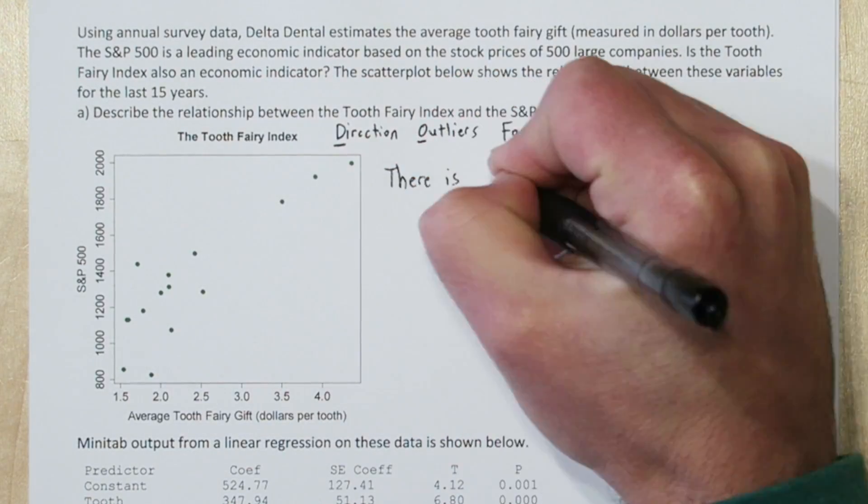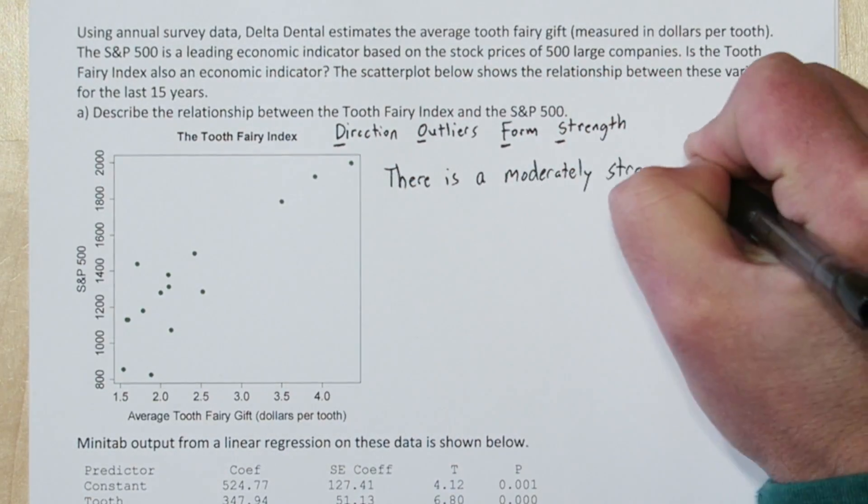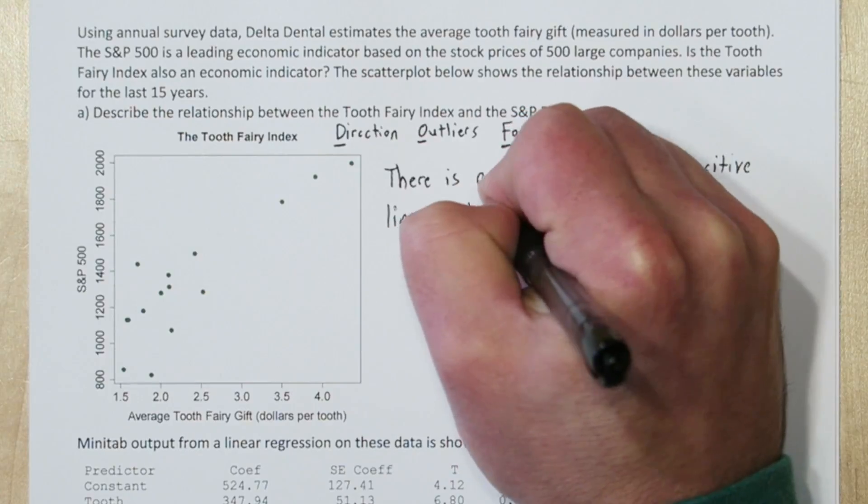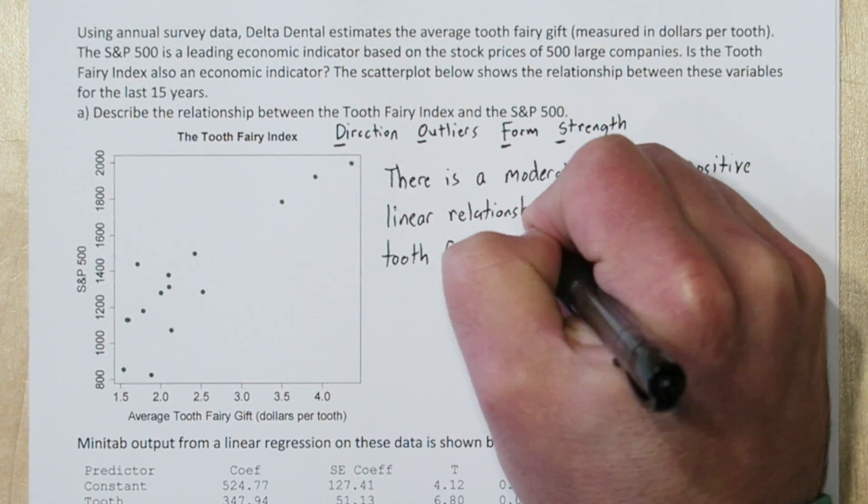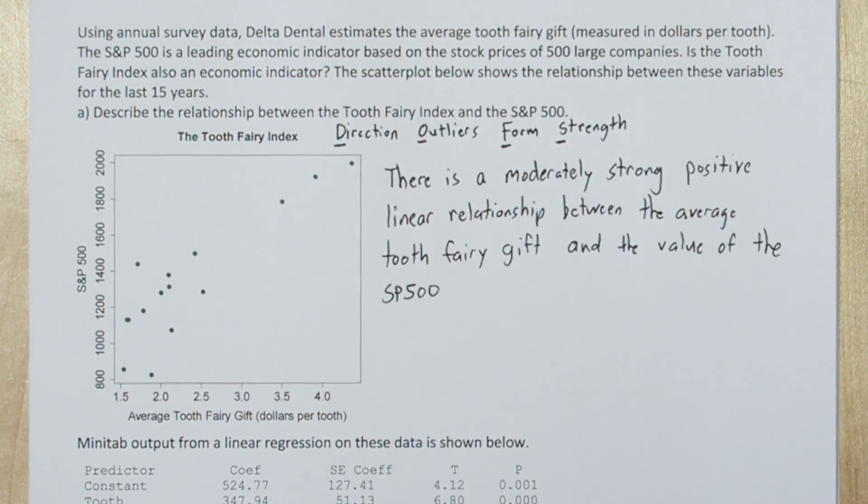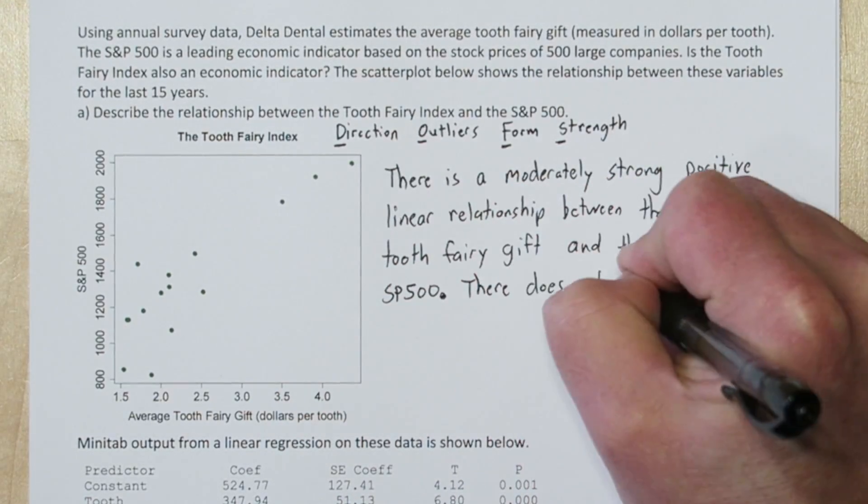So for our description, we'll say there's a moderately strong, that's the strength, positive, that's the direction, linear, that's the form, relationship between the average tooth fairy gift and the value of the S&P 500.